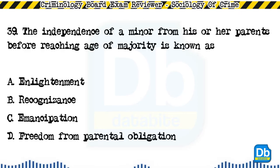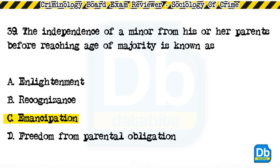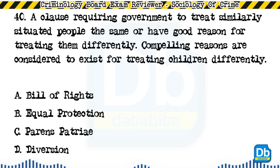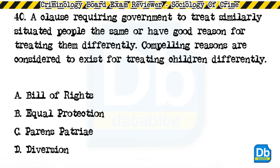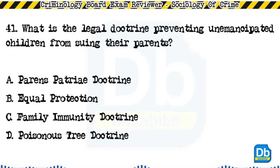Question 39: The independence of a minor from his or her parents before reaching the age of majority is known as: a) enlightenment, b) recognizance, c) emancipation, d) freedom from parental obligation. The answer is C, emancipation. Question 40: A clause requiring government to treat similarly situated people the same, or have good reason for treating them differently; compelling reasons are considered to exist for treating children differently: a) bill of rights, b) equal protection, c) parens patriae, d) diversion. The answer is B, equal protection.